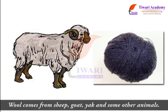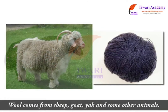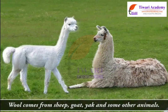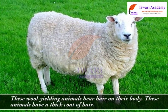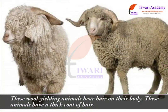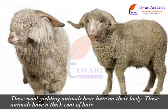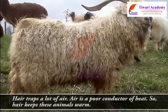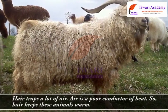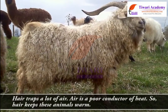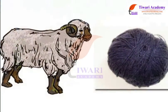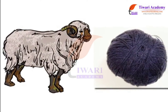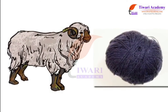Wool comes from sheep, goat, yak, and some other animals. These wool-yielding animals bear hair on their body. These animals have a thick coat of hair. Hair traps a lot of air, and air is a poor conductor of heat, so hair keeps these animals warm.